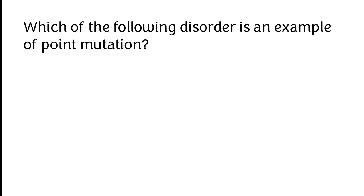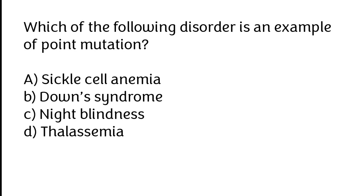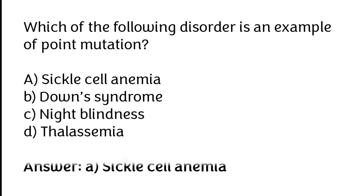Which of the following disorders is an example of point mutation? The correct answer is option C. Sickle cell anemia disorder is an example of point mutation.